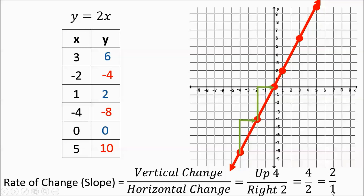Upward is a positive direction and right is a positive direction, so we could think of this as 4 over 2. If you think of 4 over 2 in lower terms, you could think of it as 2 over 1 — up 2, right 1. If you look at the next points, up 2, right 1 fits. You could go up 2, right 1 again and again — all those moves still fall along the line. That is your rate of change in lowest terms. If you think of this as a fraction, 2 over 1 is exactly the same thing as 2. And if you look at the equation y equals 2x, that coefficient 2 shows what the rate of change, or slope, of the line is going to be.